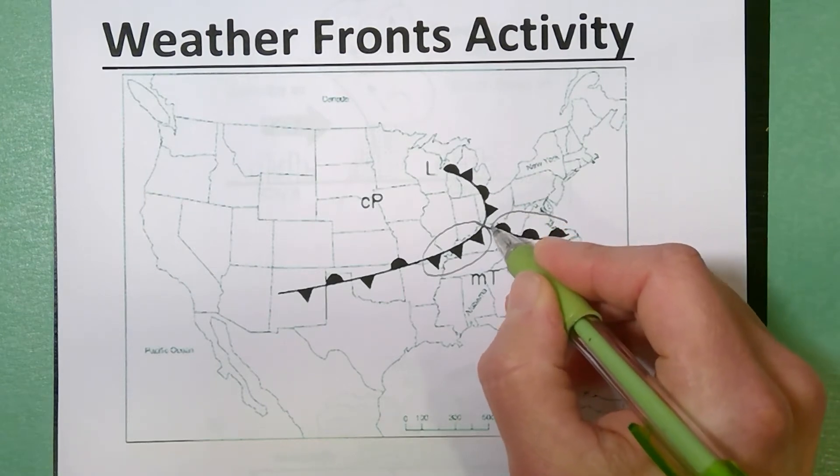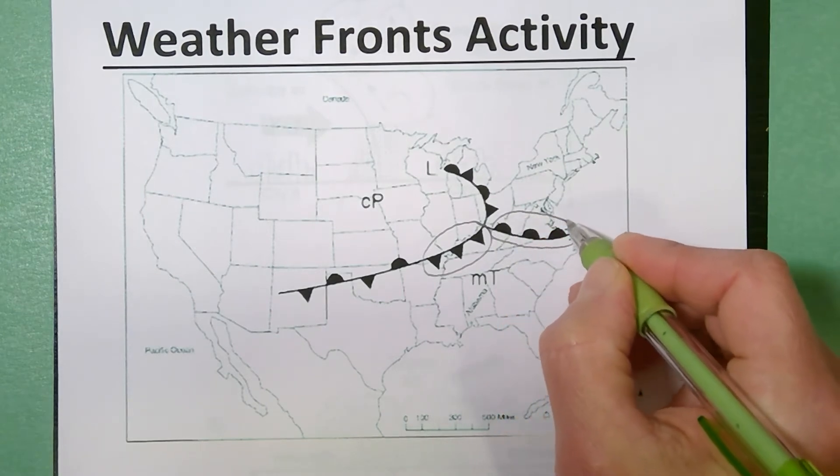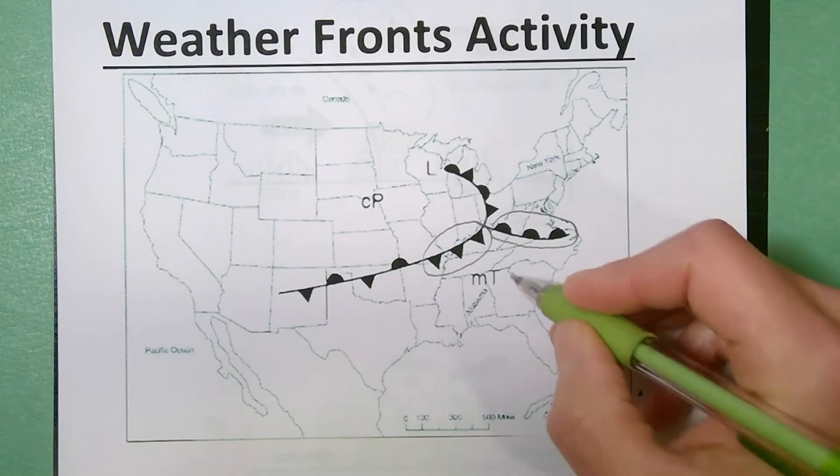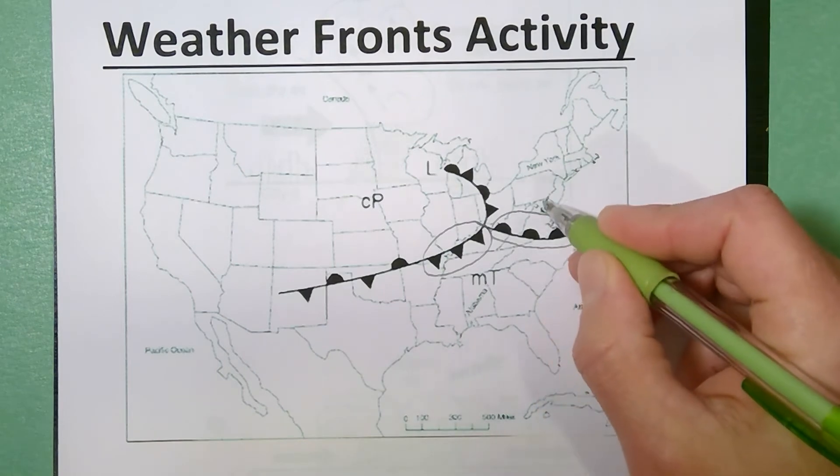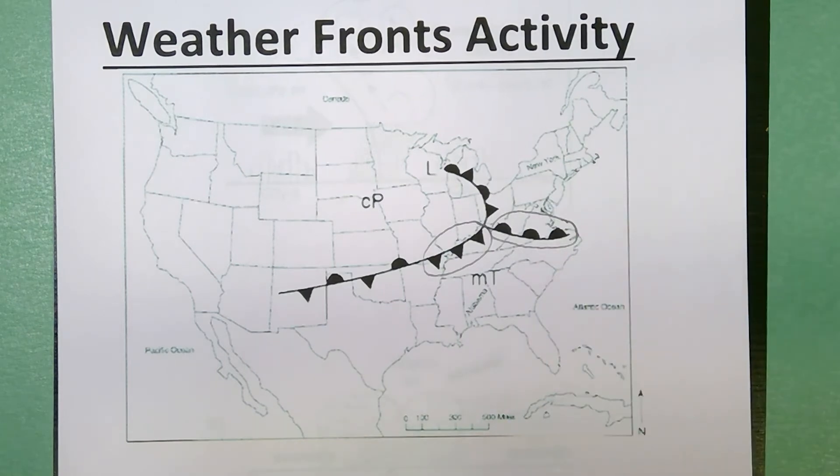This section of this system would be considered a warm front. In a warm front you have maritime tropical air pushing into continental polar air.